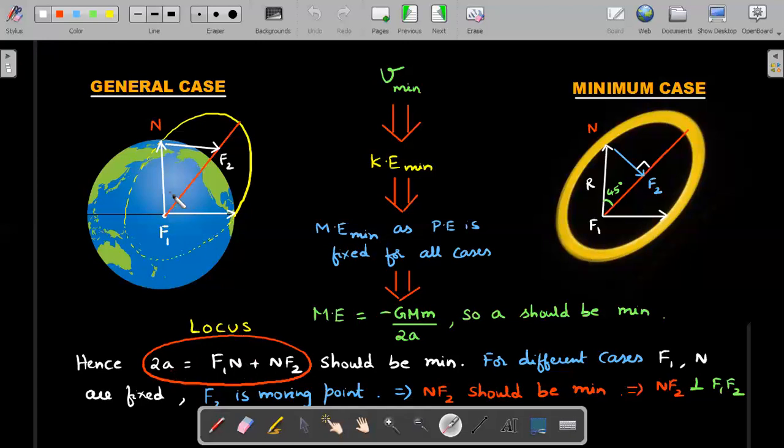The thing is, since F1N is fixed in all the cases, right? Whether you have a bigger ellipse or a smaller ellipse, the final position is reaching the North Pole. So in this expression, the value of F1N is fixed. So for 2A to be minimum with F1N fixed, you want NF2 to be minimum.